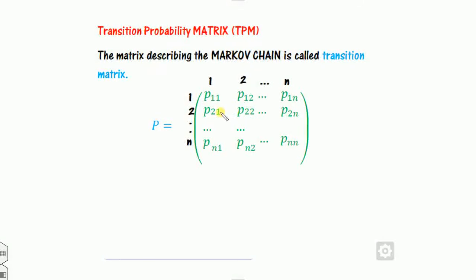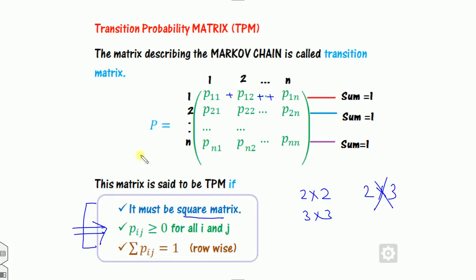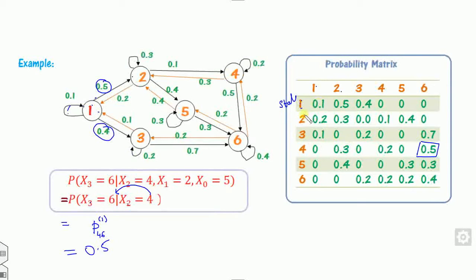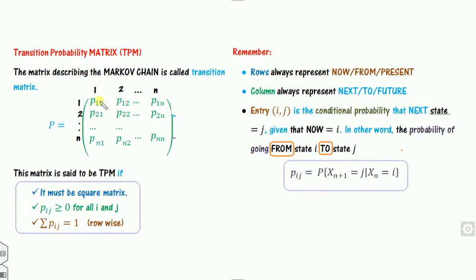The corresponding matrix is called the Transition Probability Matrix (TPM). There are three properties: first, it must be a square matrix (2×2, 3×3, etc., but not 2×3); second, all elements must be greater than or equal to 0; third, the sum of each row must equal 1. If any matrix satisfies these three properties, we call it a TPM.